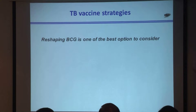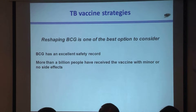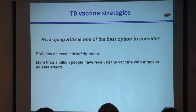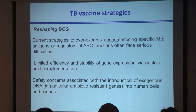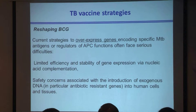I believe — and many investigators believe — that reshaping BCG is one of the best options to consider, for the simple reason that BCG has an excellent safety record. It has been delivered to about one billion people with no or very little side effects. So if we are able to maintain BCG's safety level while improving it, going into clinical trials will be much easier than attenuating virulent TB.